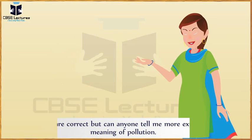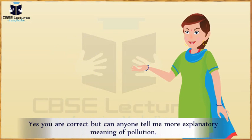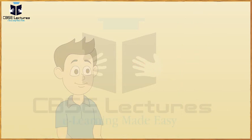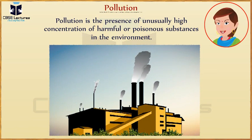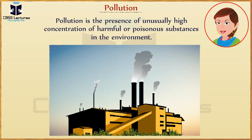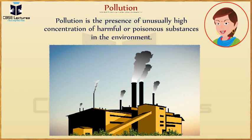Yes, you are right. But can anyone tell me a more explanatory meaning of pollution? No ma'am. Pollution is the presence of an unusually high concentration of harmful or poisonous substances in the environment. Pollution contaminates the air and water with such poisonous substances and makes them impure to such an extent that they become harmful to human beings, animals, and plants as well.